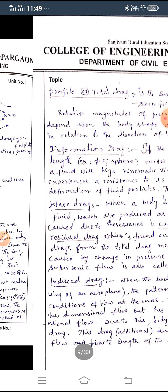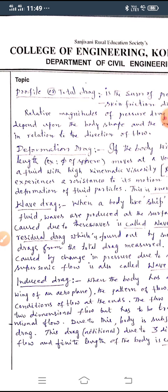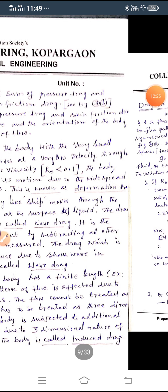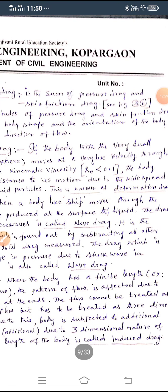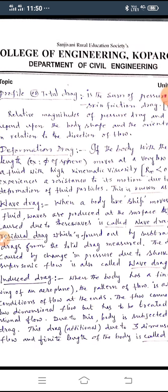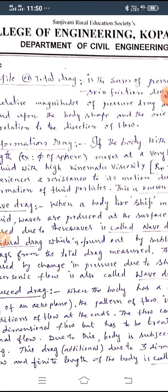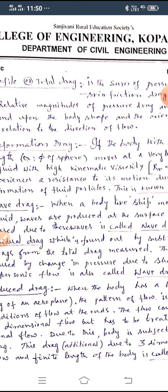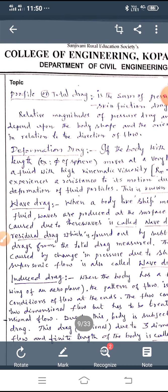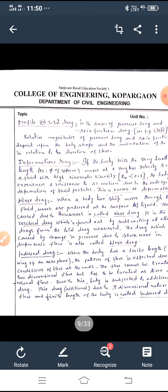Now, coming to the profile drag or total drag, it is nothing but the summation of the first two drag, that is skin friction drag and pressure drag, whereas deformation drag. If the body, with the very small length, that is example, diameter of sphere moves at a very low velocity through a fluid with a high kinematic viscosity, Re is less than 0.1, the body experiences a resistance to its motion due to the widespread deformation of fluid particles. This is known as deformation drag.